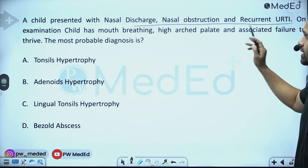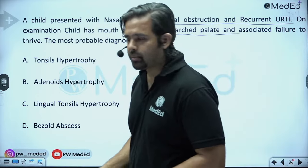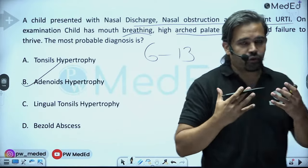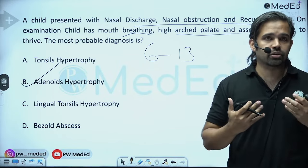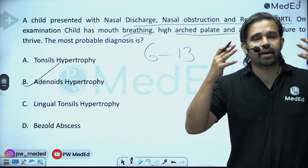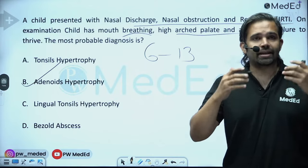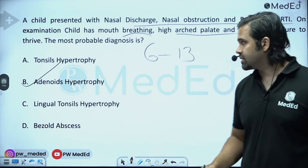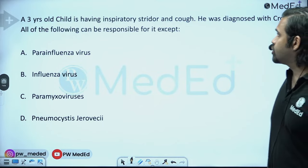A child with nasal discharge, nasal obstruction, recurrent URTI, mouth breathing, and high arch palate — adenoid hypertrophy. Adenoids form between ages 6 and 13 and cause the adenoid facies due to altered ossification of facial bones from improper oxygenation, leading to high arch palate and abnormal dentition.